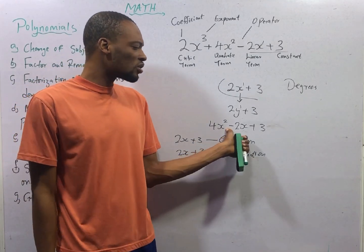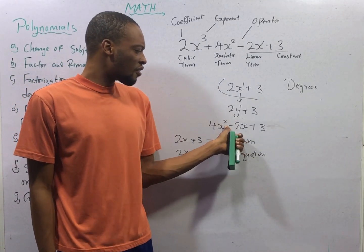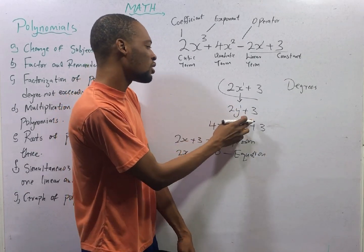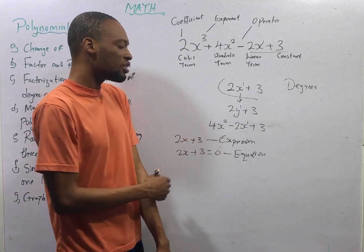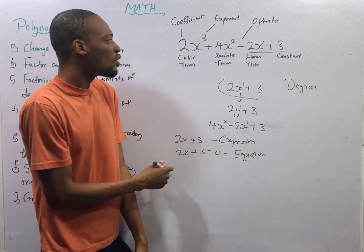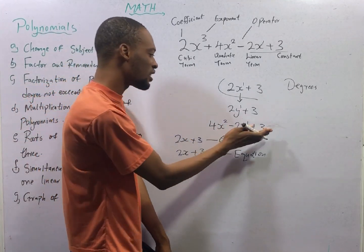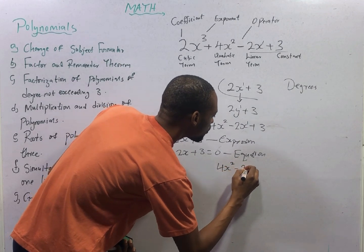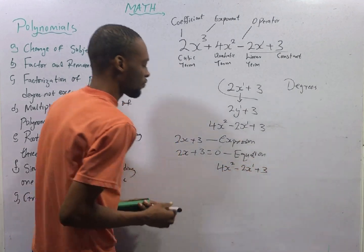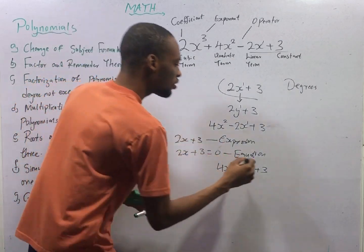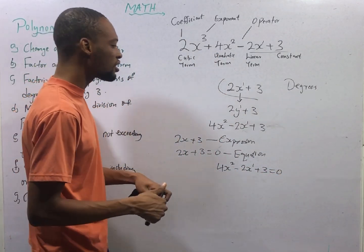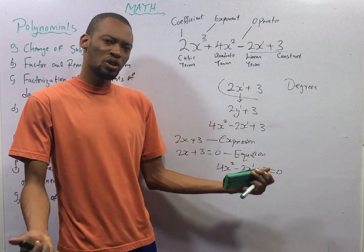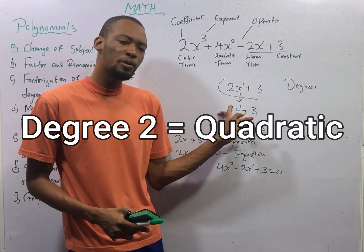Now, look at this second expression. The highest power of variable is 2. Arranging the powers in descending order, raised to the power of 2, then raised to the power of 1. The highest power is 2. Therefore, this is a quadratic polynomial. This is an expression. By the time you introduce equality sign, like 4s squared minus 2s plus 3 equals 0, this is referred to as quadratic equation. And they are both quadratic polynomials because the highest power of variable is 2.